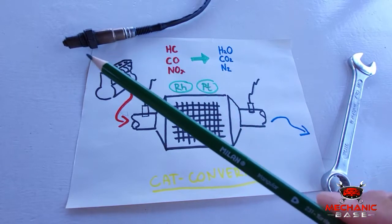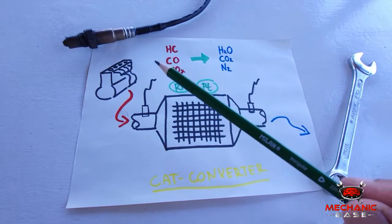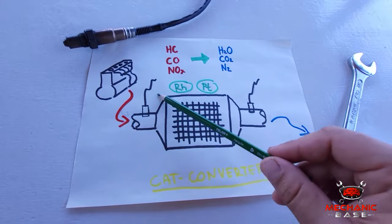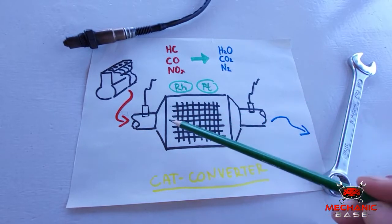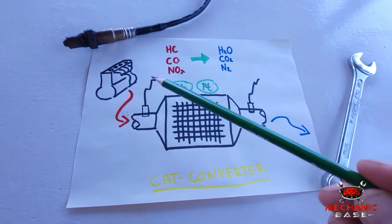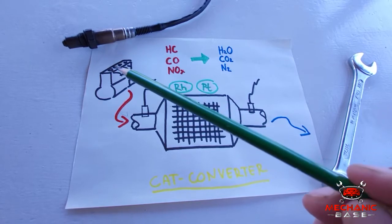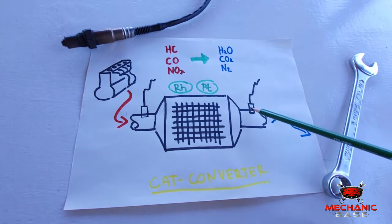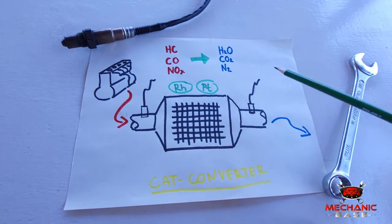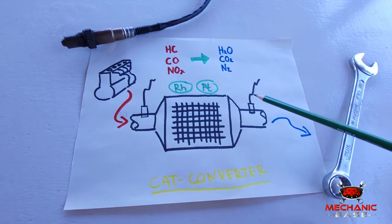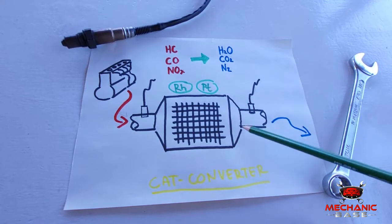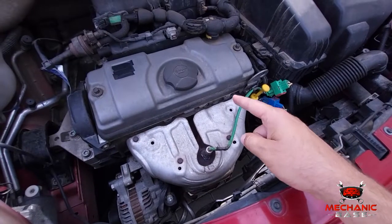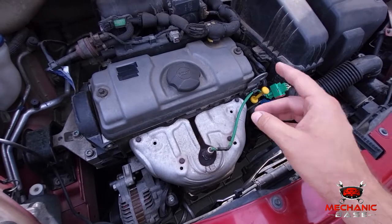Almost every car today has two sensors near the catalytic converter. One located between the engine and the converter is called the upstream oxygen sensor. Its job is to analyze the content of raw exhaust gases, which the vehicle ECU then uses to adjust the air-fuel mixture for optimum performance. The other one, located behind the catalytic converter, is called the downstream sensor. Its only purpose is to determine if the catalytic converter is working as it should.